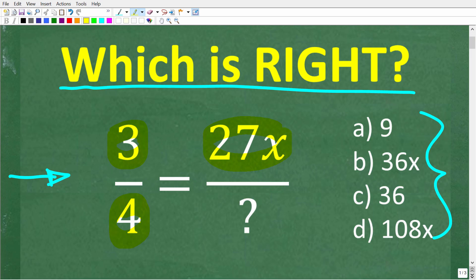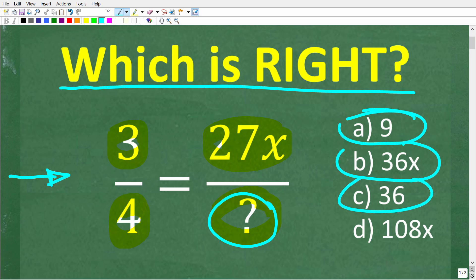It's equal to 27x over something, and we're trying to determine this value right here. Now we do have a multiple choice question. So A is 9, B is 36x, C is 36, and D is 108x.